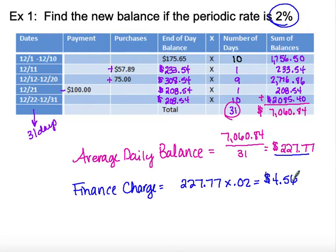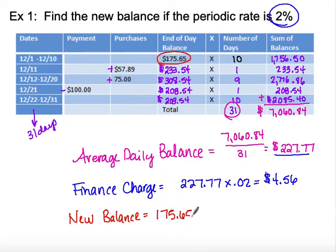Now we're ready to find our new balance. Our new balance starts with the end-of-day balance from the beginning of the month, then we add in our purchases and subtract out our payments. This is where we should end up — and it's also a double-check.